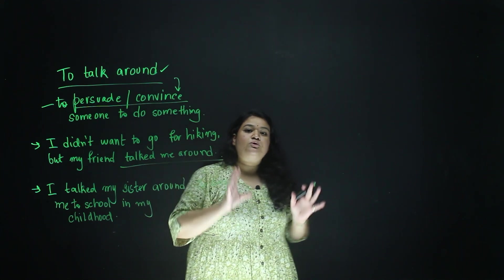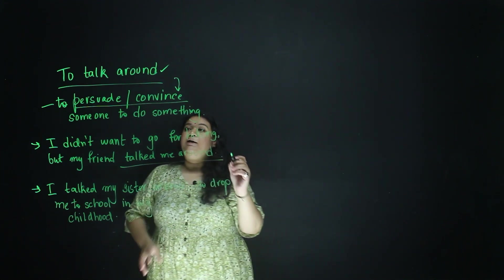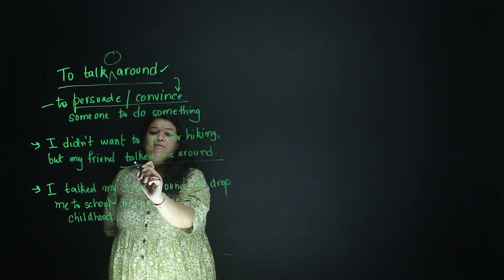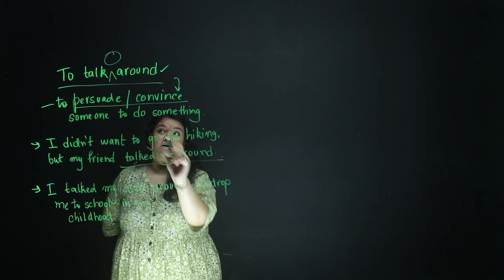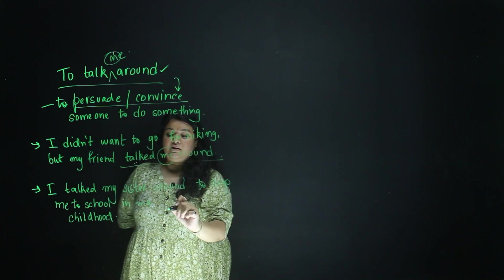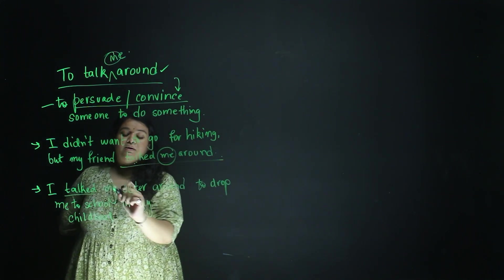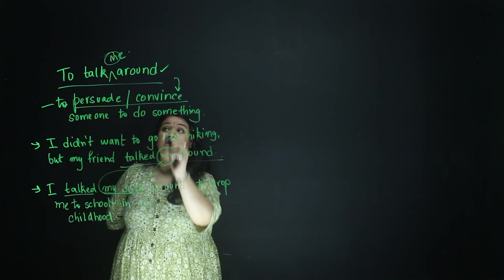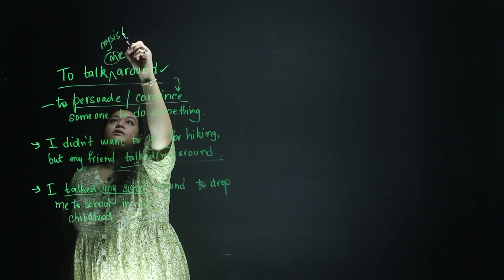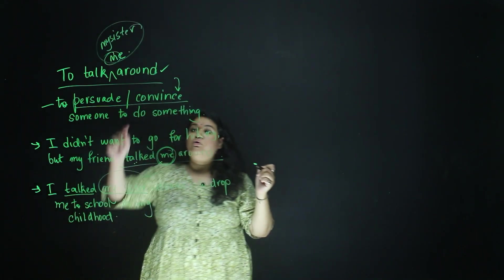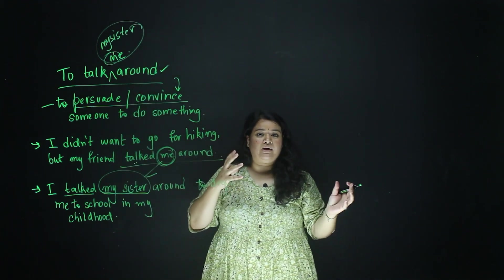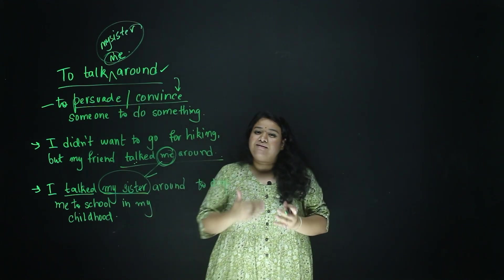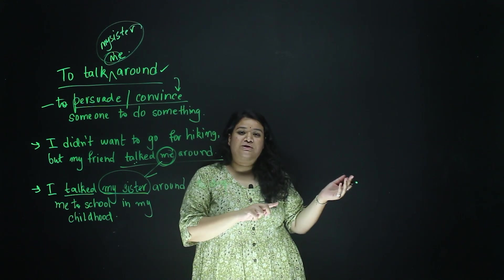One pro tip to use this phrasal verb is to always mention the person. For example, 'my friend talked me around' — 'me' is the person. Or 'I talked my sister around' — 'my sister' is the person. Always mention the person whom you want to convince, or who convinced you, between these two words, and then use it in your sentence. Now let's move on to the next phrasal verb.